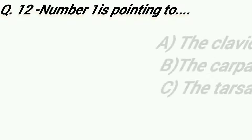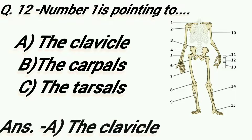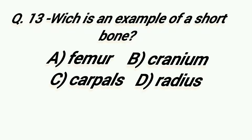Number 1 is pointing to: Option A: Clavicle, Option B: Carpals, Option C: Tarsals. Right answer is Option A, Clavicle. Which is an example of a short bone? Option A: Femur, Option B: Cranium, Option C: Carpals, Option D: Radius. Right answer is Option C, Carpals.